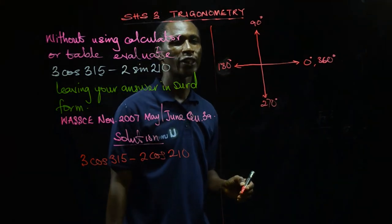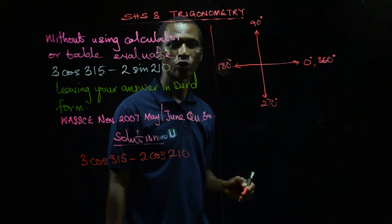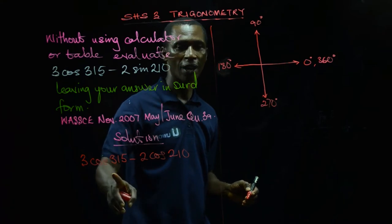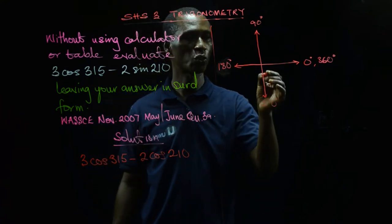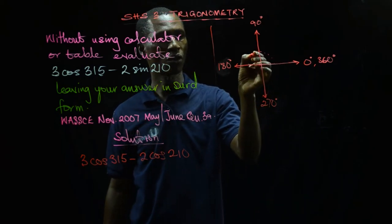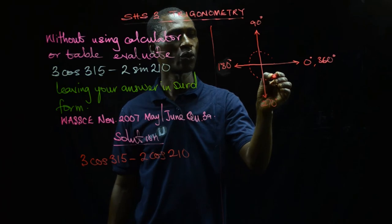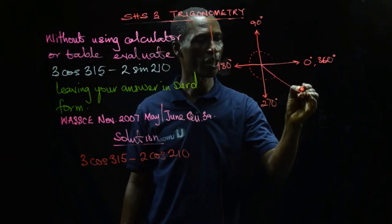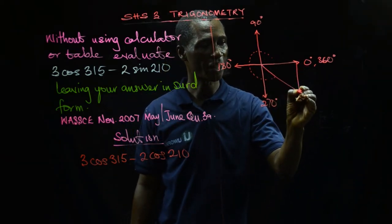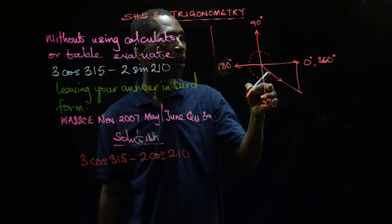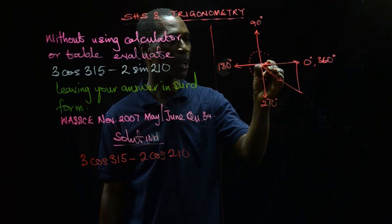So at this point, we try to look at the movement to get 315. So 315 is past 270, moving clockwise. We move all the way to 270, and our figure is somewhere here. If I subtract 315 from 360, I'm left with 45 degrees.